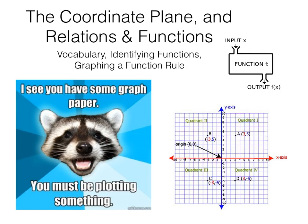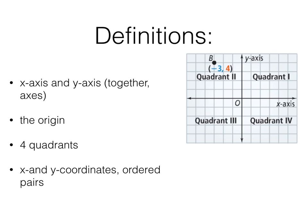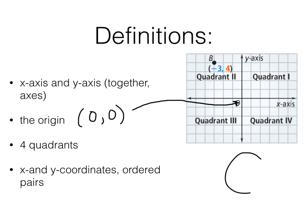We're looking at the coordinate plane, identifying functions, and graphing a function rule. Your coordinate plane has an x-axis and a y-axis. The x-axis is horizontal; the y-axis is vertical. The origin is the ordered pair (0, 0). We have four quadrants — quadrant 1, 2, 3, and 4 — often labeled with Roman numerals. If you draw yourself a C, you always know what order to number the quadrants in.